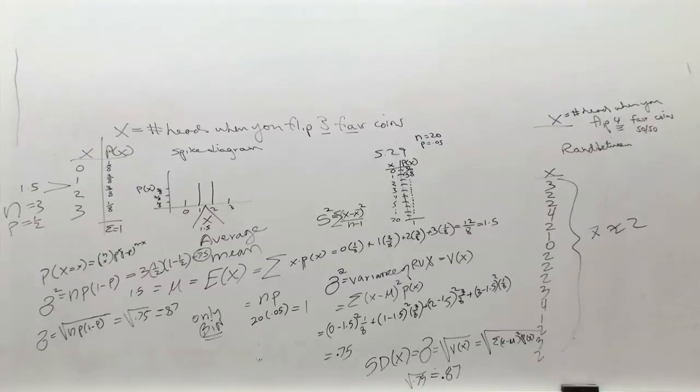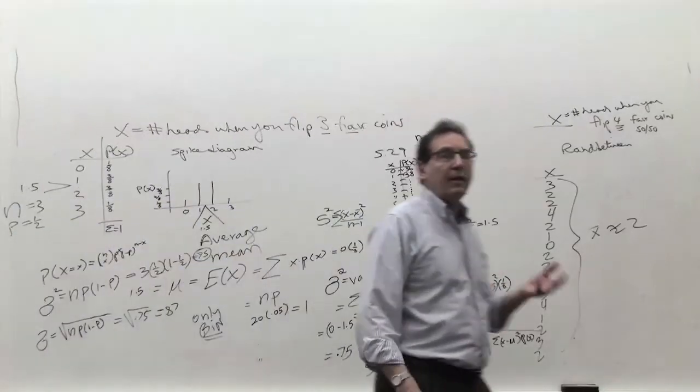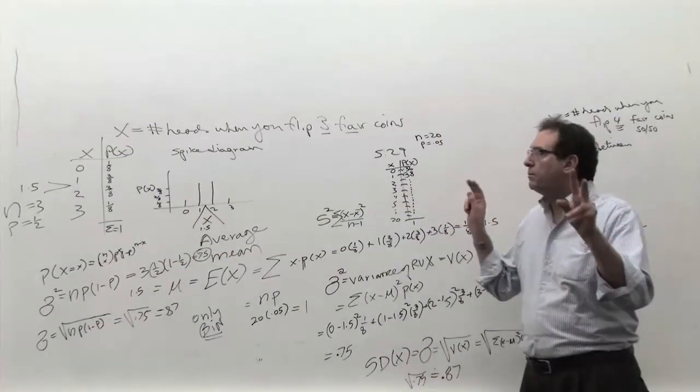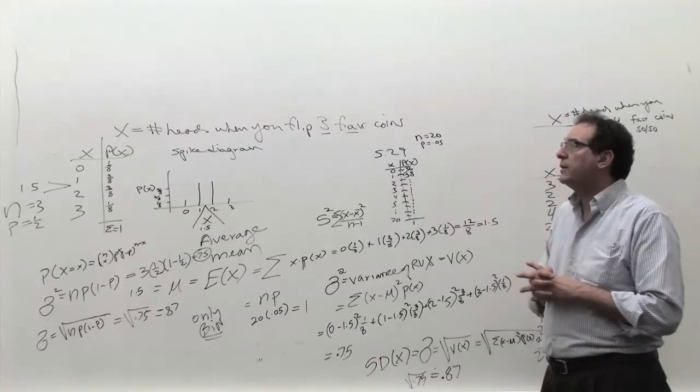We're going to do an example called the hot dog example. It's on the syllabus. It's really not found in a book but it shows you the spirit of finding the E of x in a real life example where the numbers are not given to you on a silver platter.